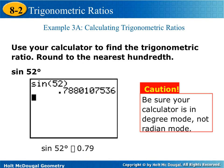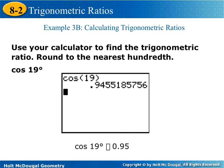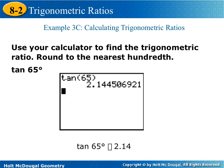The next couple of examples are just practicing with your calculator. If you put the sine of 52 degrees in your calculator, you will get 0.788. It is important that your calculator is in degree mode. If it's in radian mode, you'll get the wrong answer — you'll get like one point something. Cosine of 19 gives you 0.9455. And tangent of 65 gives you 2.1445.